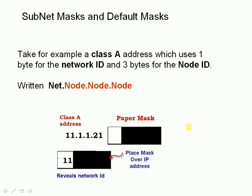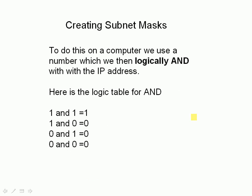For subnet masks and default masks, if we take a class A address, it uses one byte for the network ID and three bytes for the node ID — network, node, node, node. Using the paper illustration, we take a mask with a hole cut out for the single network byte, place it over the IP address, and out pops the network ID. So given an IP address like 11.something, we logically AND it with the subnet mask.